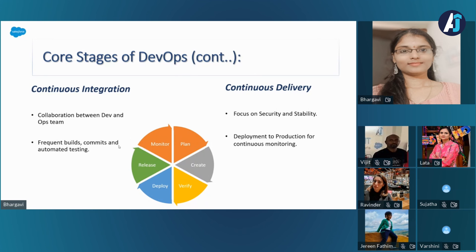To summarize: plan, create, and verify form the foundation for continuous integration, where developers focus on continuous development and automated testing. The remaining three — deploy, release, and monitor — form the path of continuous delivery, ensuring that changes move smoothly to production and that the application stays consistent and reliable for end users, with full focus on security and stability.